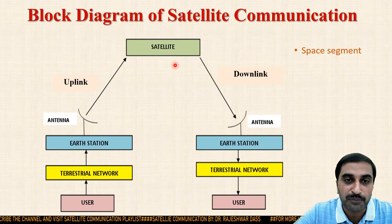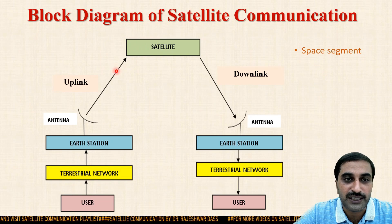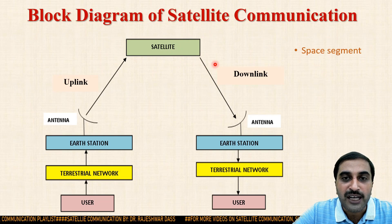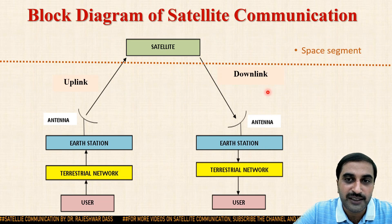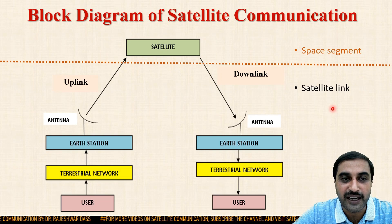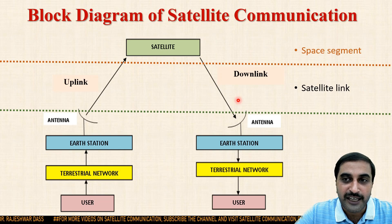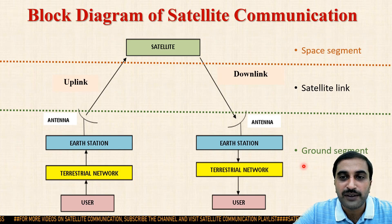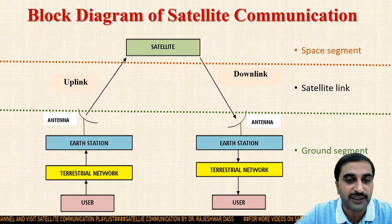In the satellite there are units — one is the receiving unit, jo aapka transmitting earth station antenna se information ko receive karta hai. Doosra aapka transmitting unit hai, jo information ko transmit karta hai towards the receiving earth station. The second part is the satellite link — satellite link mein aapka uplink and downlink hota hai. Teesra segment aapka basically ground segment hai. So, satellite communication is divided into three parts: space segment, satellite link, and ground segment.